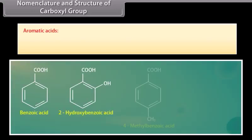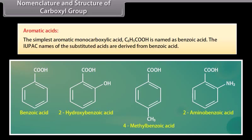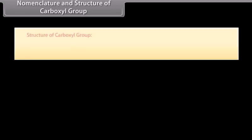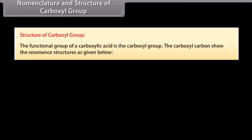The simplest aromatic monocarboxylic acid C6H5COOH is named as benzoic acid. The IUPAC names of the substituted acids are derived from benzoic acid. Structure of carboxyl group: the functional group of a carboxylic acid is the carboxyl group. The carboxyl carbon shows resonance structures as given below.